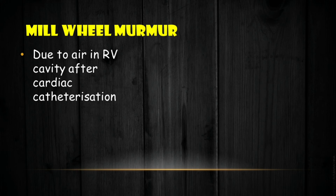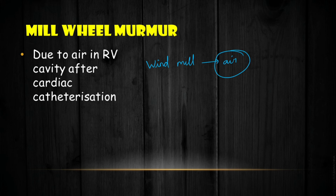Mill Wheel murmur is due to air in the right ventricular cavity after cardiac catheterization. Mnemonic: relate windmill with air — whenever there is air in the right ventricle, that leads to the Mill Wheel murmur.